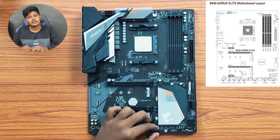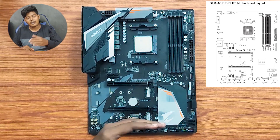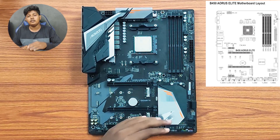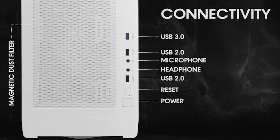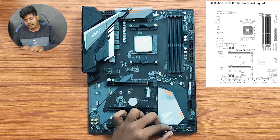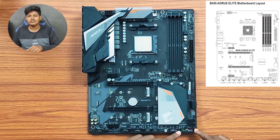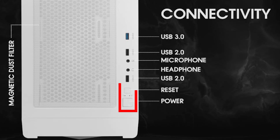If you want to use the Sys fan header, the Sys fan is a system fan — it is an exhaust fan header. Next, we will use the USB 3.0 connector. In our system, we will have a USB 3.0 port. We will use this for the front panel. We have a front power switch, a reset switch, a power LED, and a speaker.